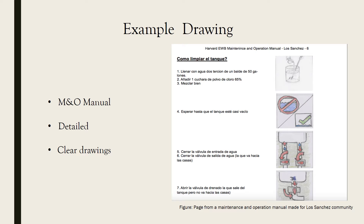This is an example of a drawing helpful to the community in Los Sanchez Dominican Republic. It's an operation and maintenance manual on how to clean a water tank. Whoever made this manual included very small details which are very important, and it's extremely easy to understand. Although it's in Spanish, you can just look at the pictures and understand what they're trying to say — a great example of a drawing that was very helpful to the community.